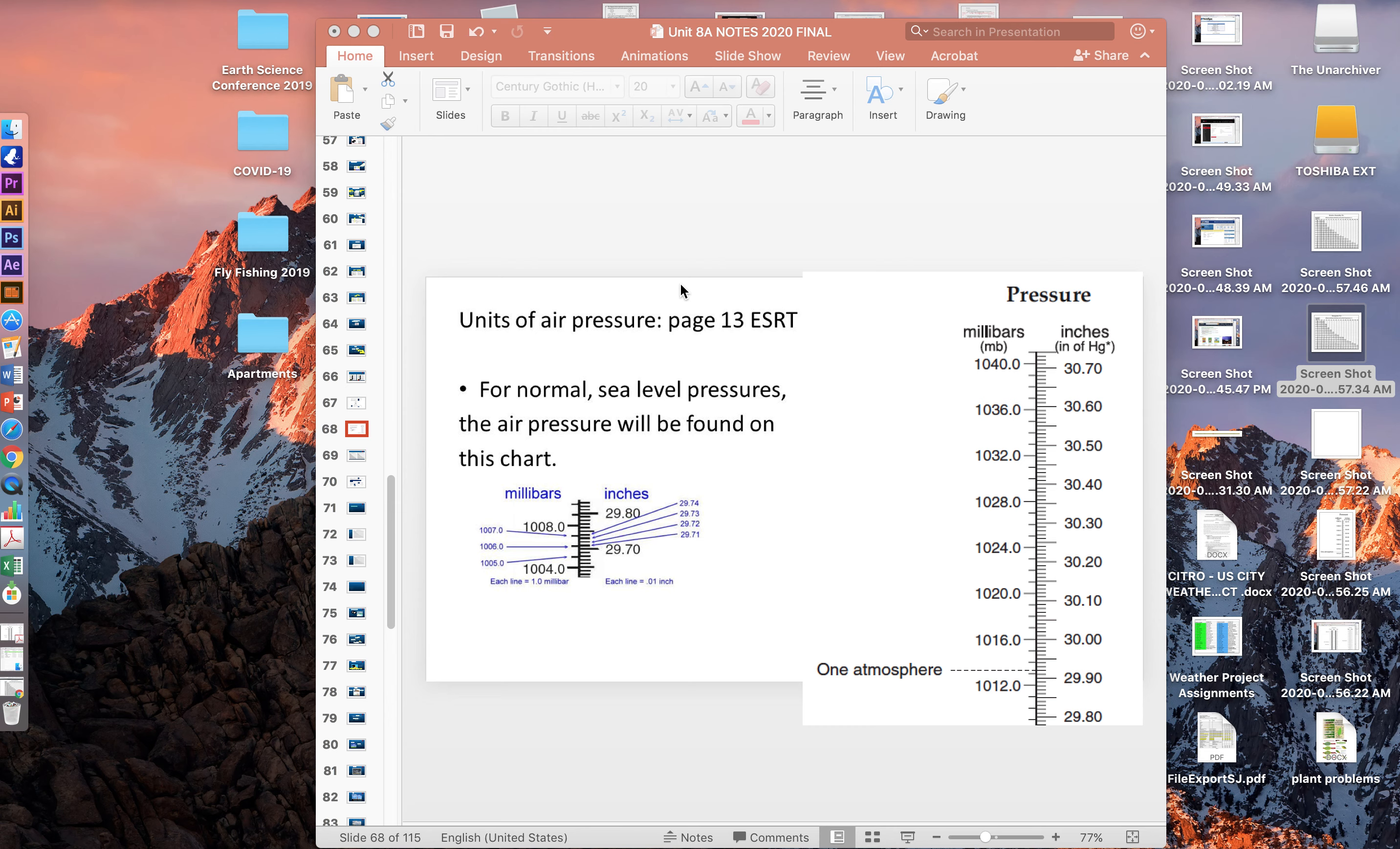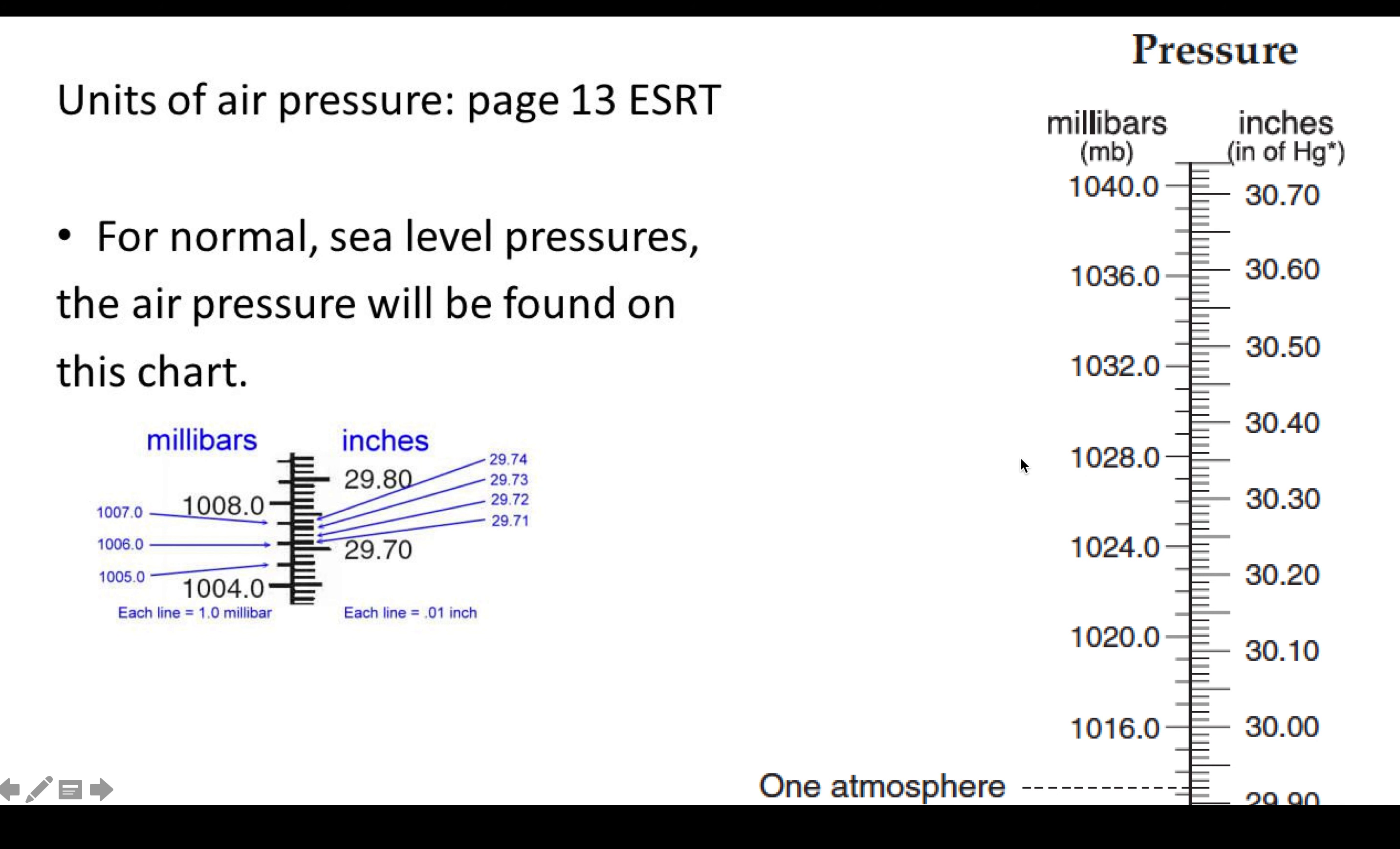So on page 13, we had the temperature charts that have Fahrenheit, Celsius, and Kelvin. And on the right of it, we also have air pressure. Remember, a barometer is used to measure air pressure. We use millibars for the station models. However, standard format for lovely Americans is mainly in inches of mercury. That's what inches of HG stands for here. Really, the inches in mercury, you'll use that if you need to convert.